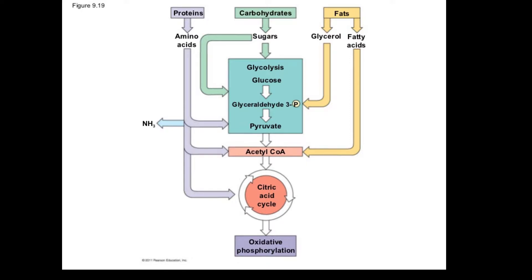This tiny teach is about using other fuels besides glucose to produce ATP. We tend to follow glucose through cellular respiration because it starts at the very first step of ATP production, but we can produce ATP from other fuels like protein and fats.